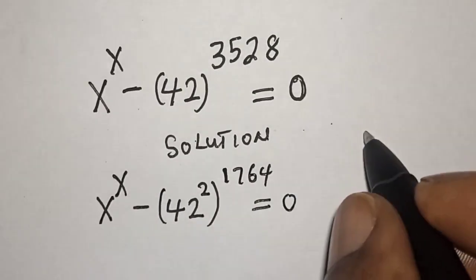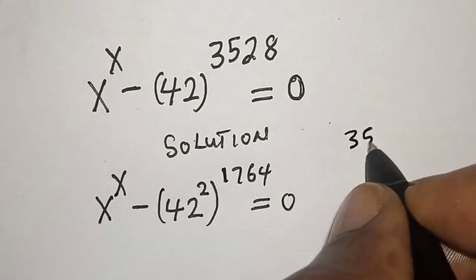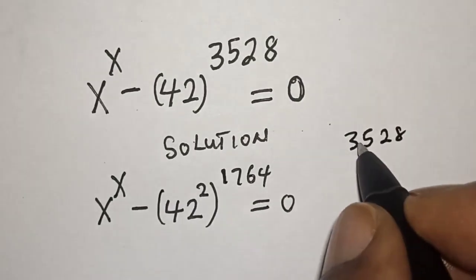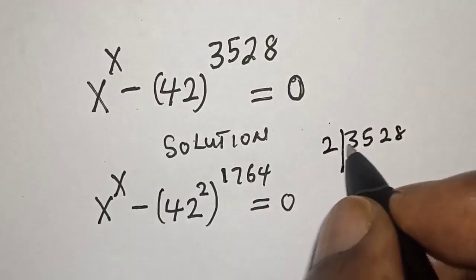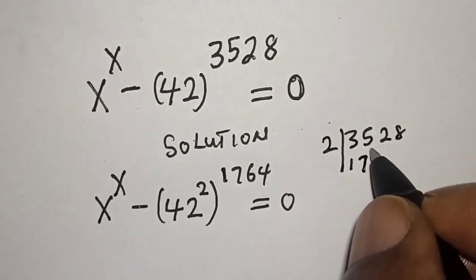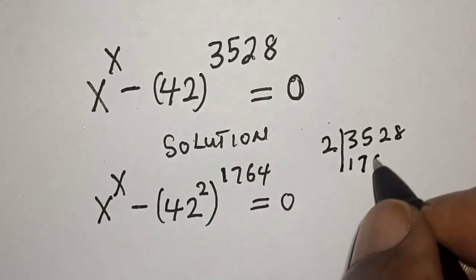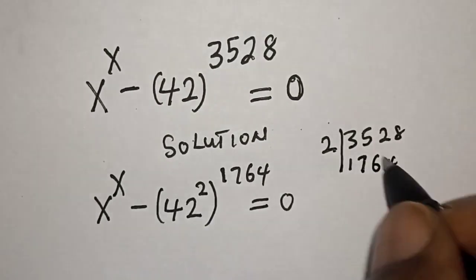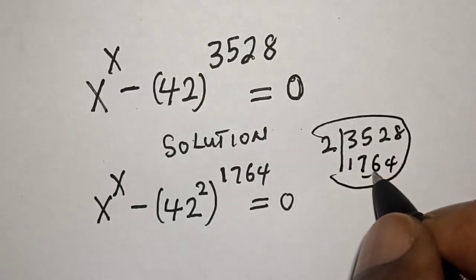How do we get this 1764? If you have 3528 and you divide by 2: 2 in 3 is 1 remain 1, in 15 that is 7, then 2 in 12 is 6, and 2 in 8 is 4. So that is how we get this value.